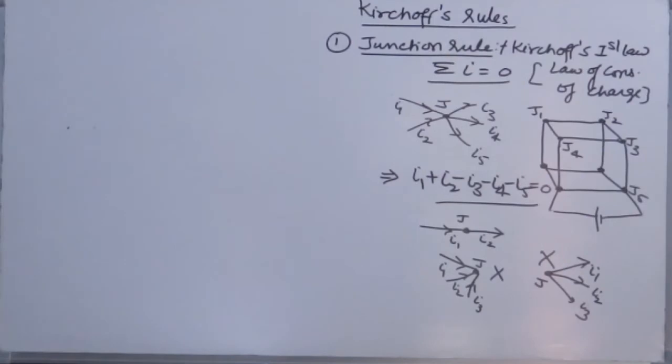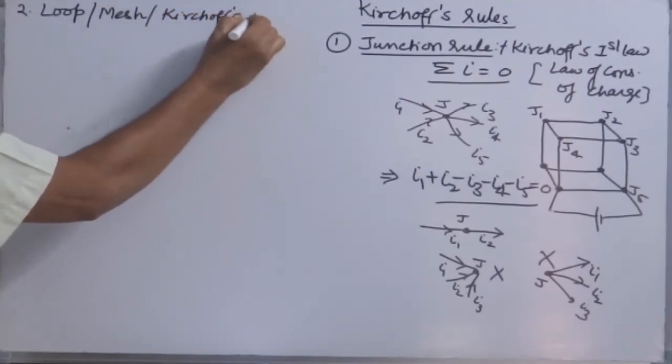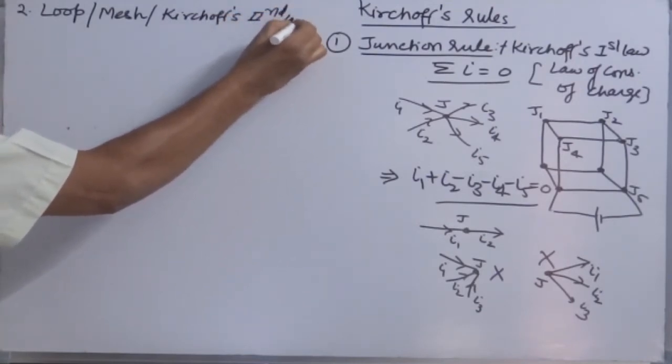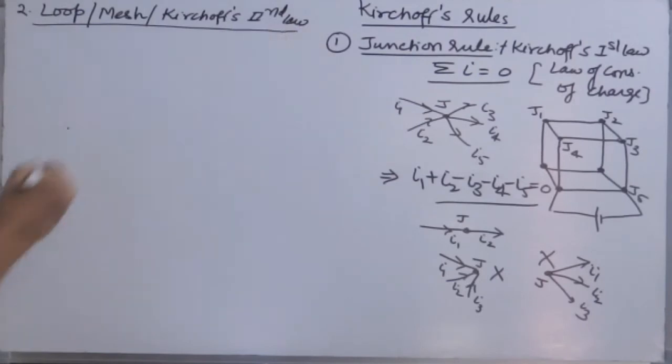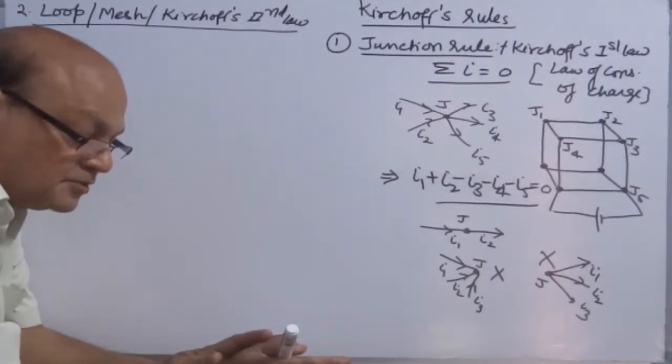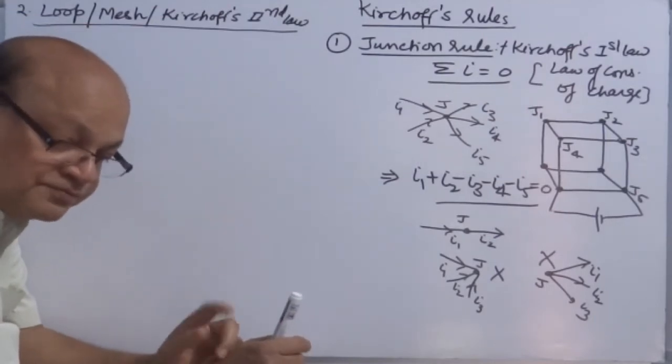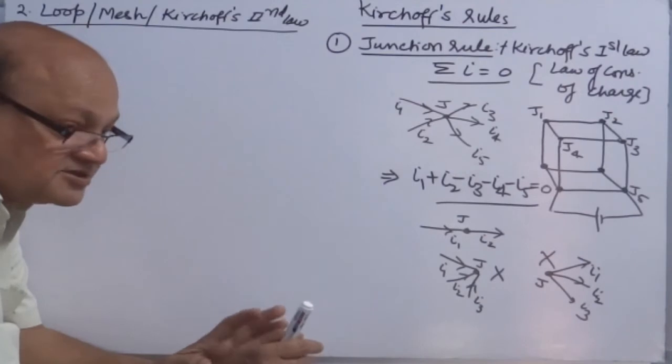Second rule is loop rule, or mesh, Kirchhoff's second law. What does it say? It states that the total algebraic sum of changes in potential around a closed loop is always 0.